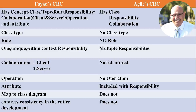Third difference: the Friyad CRC card has a role. Agile doesn't have a role. So you're not building a true picture of what's really going on in your system. Fourth difference: in the Friyad CRC card there is one responsibility — unique and within context. You cannot have multiple responsibilities. The traditional CRC card and Agile CRC card allow multiple responsibilities, which is, in my opinion, a disaster.